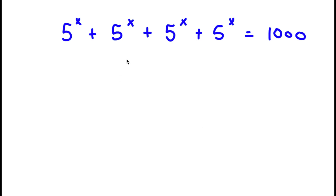So in this problem, I have 5 to the power of x plus 5 to the power of x plus 5 to the power of x plus 5 to the power of x is equal to 1,000.